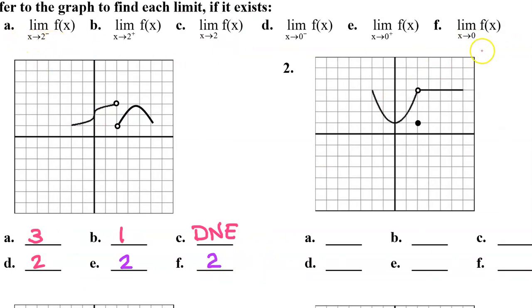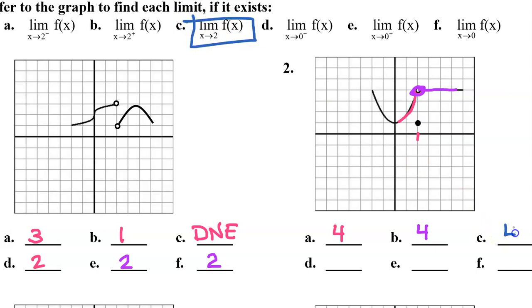Let's find all of those same limits for problem number 2. The limit as x approaches 2 from the left — as we approach 2 from the left we are approaching a y value of 4. How about from the right? As we approach 2 from the right it looks like we are approaching that same y value of 4. Because the limit from the left and the limit from the right are the same, the overall limit as x approaches 2 is also 4.